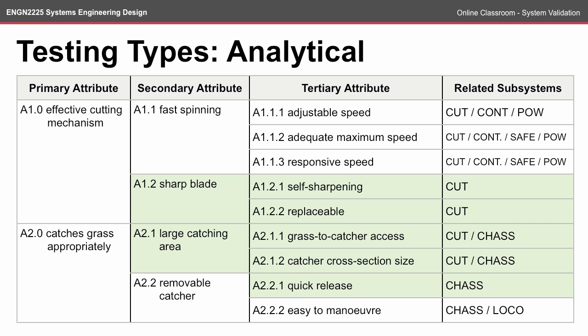For example, the replaceable attribute of the system, when it comes to the blades, doesn't necessarily need a full prototype to be able to test. At this stage, we could probably just come up with a CAD model to show how the design is going to meet that attribute. This is similar for other attributes.